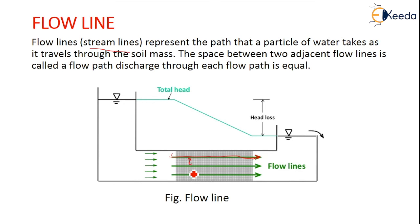This is a space. The discharge through each flow path is equal. This is the head loss from the total head at the higher elevation to the lower elevation point.